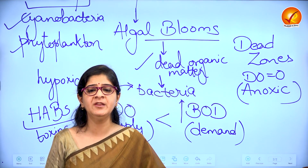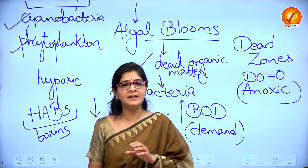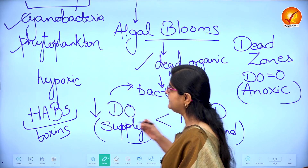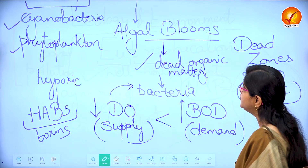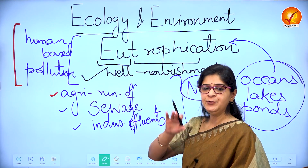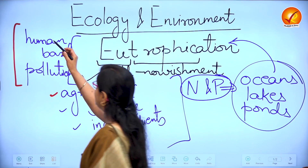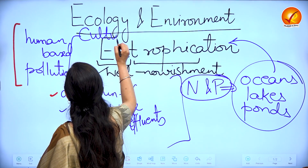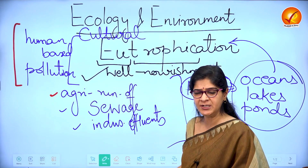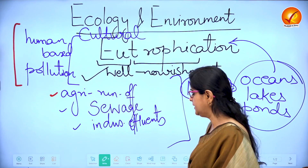All of them — aquatic ecosystems, wetlands, oceans — have experienced ecological degradation because of eutrophic conditions. Now, if eutrophication is being caused by humans, that eutrophication is called cultural eutrophication or anthropogenic eutrophication — you can call it both ways.